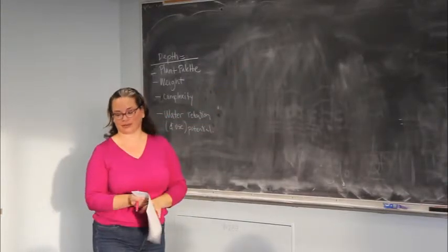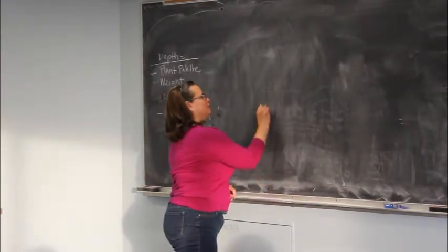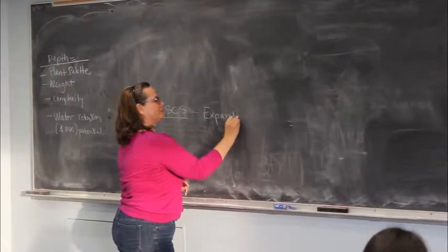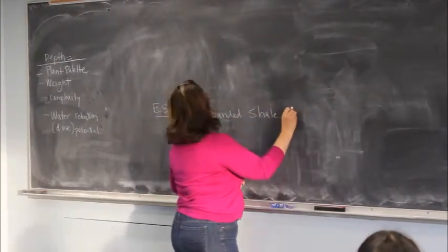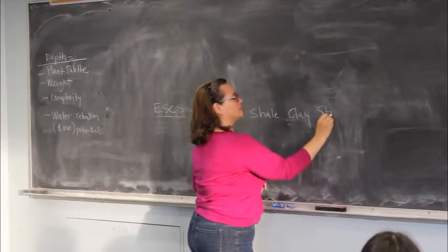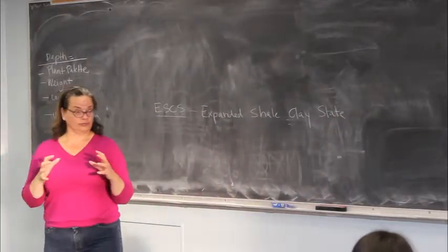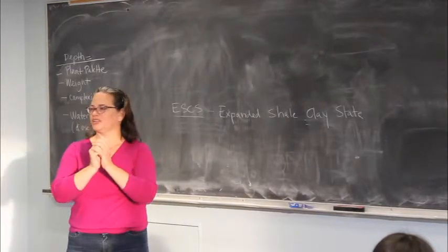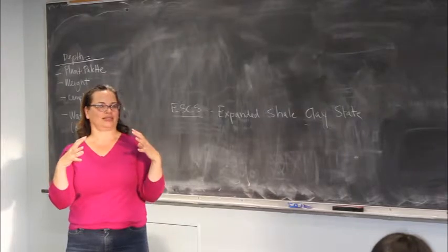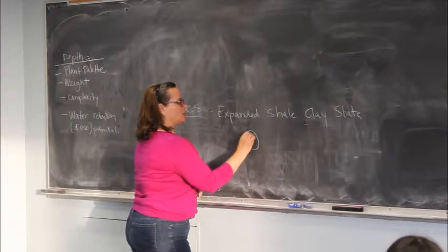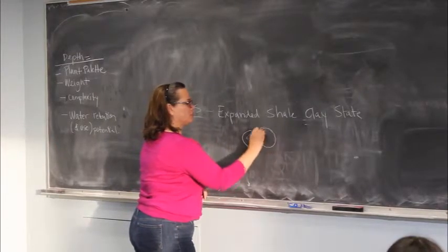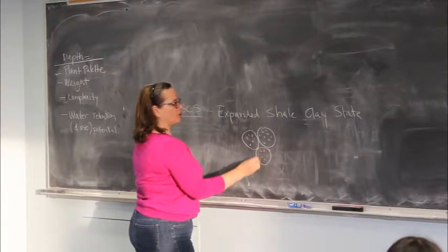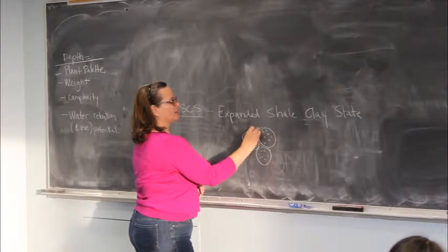So what that is, is the expanded shale, clay, or slate. And so for the aggregate, what they actually do, is they take rock, and they run it through a kiln, and they heat it up, and it actually expands, and opens up like lava rock. And so now we have aggregates that are actually porous, and so those big chunks that are in there have pores in them that are capable of holding water, and then we have sand in there too.